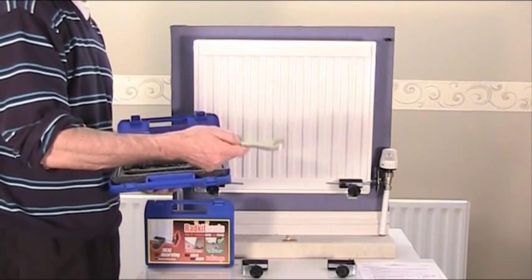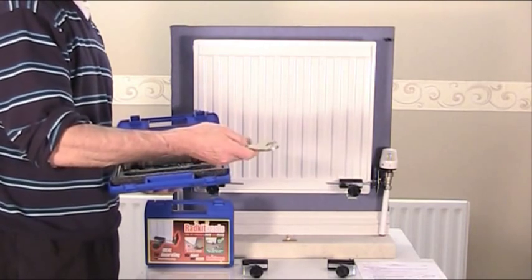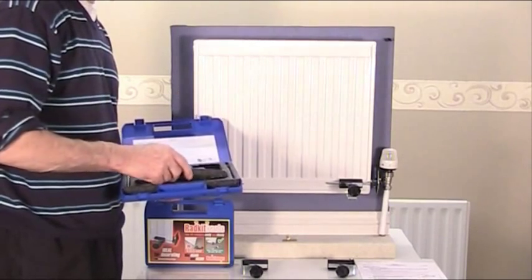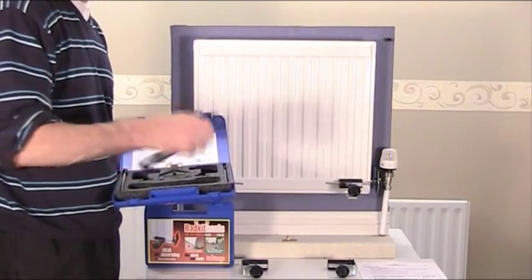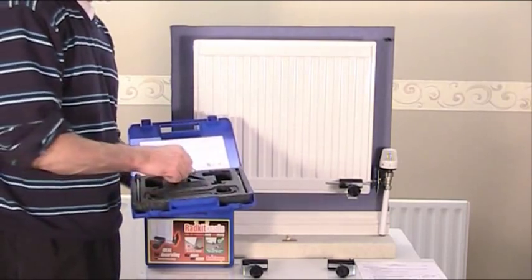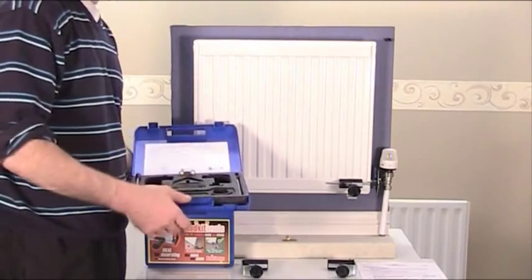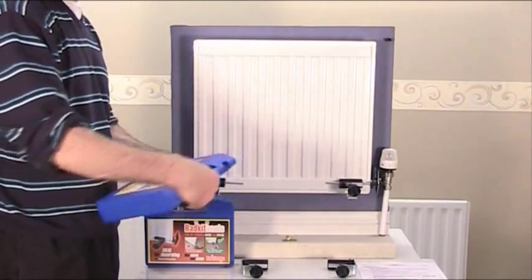The other thing you get is a purpose-made rad spanner, five mil thick, extra length for long leverage. This actually fits all radiator valves so you'll need the one spanner there. So that all comes in a nice tidy plastic case and you also get a nice decent brass bleed air vent key with that as well. So that's the Radkit Pro.